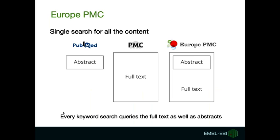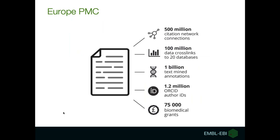You might be wondering how is Europe PMC different from PubMed or PubMed Central. When you search in PubMed, you will query only the abstract. And when you search PubMed Central, you will query only the full text. In Europe PMC, it offers you a combined search, so every keyword search queries the full text as well as abstracts.